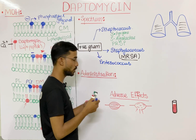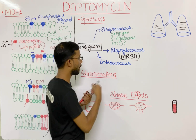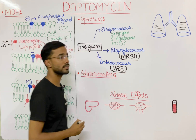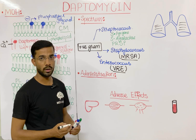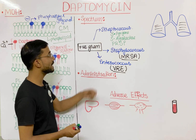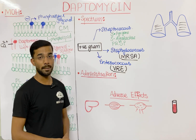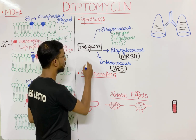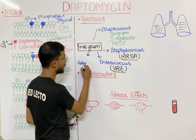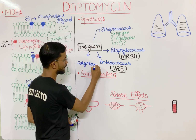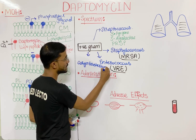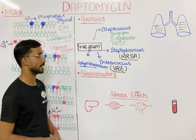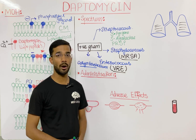Most importantly, daptomycin covers VRE — vancomycin-resistant Enterococcus. It can also provide coverage for Corynebacterium. So these are the different coverages within the antimicrobial spectrum of daptomycin.